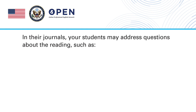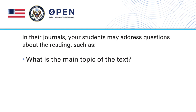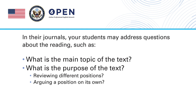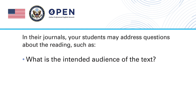In the post-reading stage, you may ask your students to reflect on the reading by writing in their journals. For this, you may want to give your students prompts to address, such as: What is the main topic of the text? What is the purpose of the text — is it reviewing different positions, arguing a position on its own, or informing the audience? And what is the intended audience of the text — is it an audience of experts or a general audience?